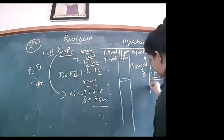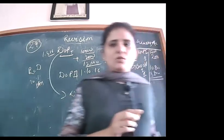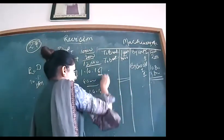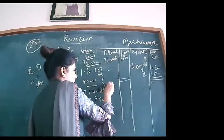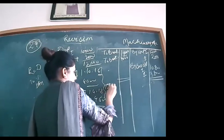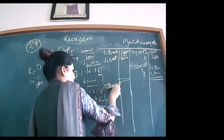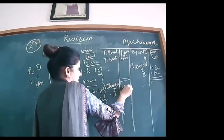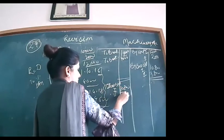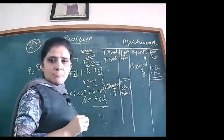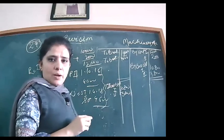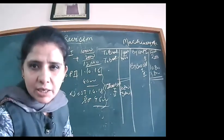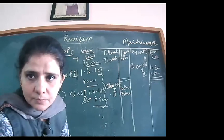Closing balances year 1: Machine 1 → ₹10,800; Machine 2 → ₹3,800. In year 2 (2017–18), opening balances brought forward: Machine 1 — ₹10,800; Machine 2 — ₹3,800. Depreciation is then charged on both, and we will continue from here. Thank you.